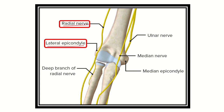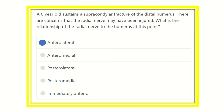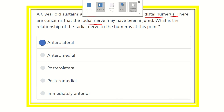The radial nerve lies laterally and anteriorly, so our final answer is anterolateral — the radial nerve lies in the anterolateral position in the supracondylar area or at the distal humerus. Thank you.